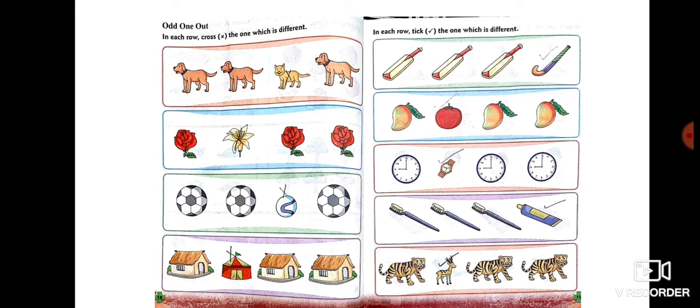In the first row of page 19, there are three bats but one hockey stick. As the hockey stick is not the same as the rest of the objects, we will take that out—that is, we will put a tick on the hockey stick.